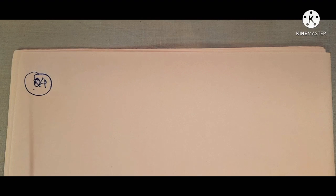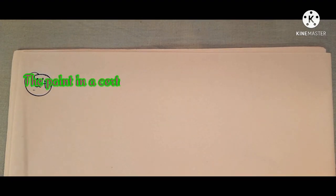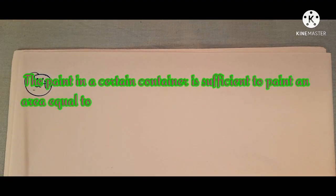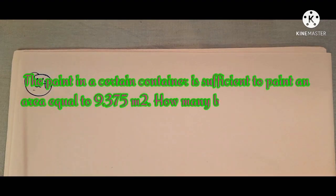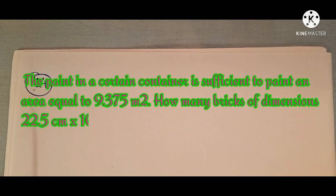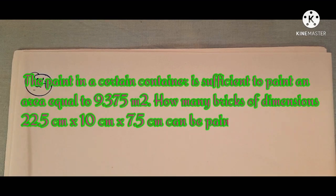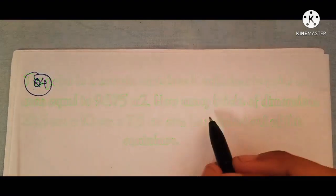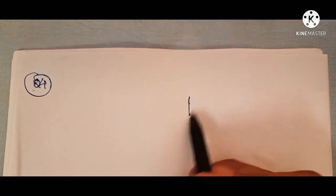Hello students, today we'll be doing 13.1 question number four. The paint in a certain container is sufficient to paint an area equal to 9.375 meter square. How many bricks of dimension 22.5 centimeter into 10 centimeter into 7.5 centimeter can be painted out of this container? The brick is in the shape of a cuboid.